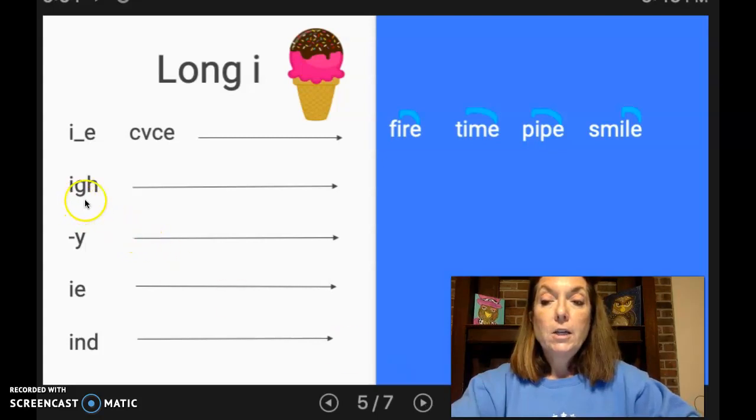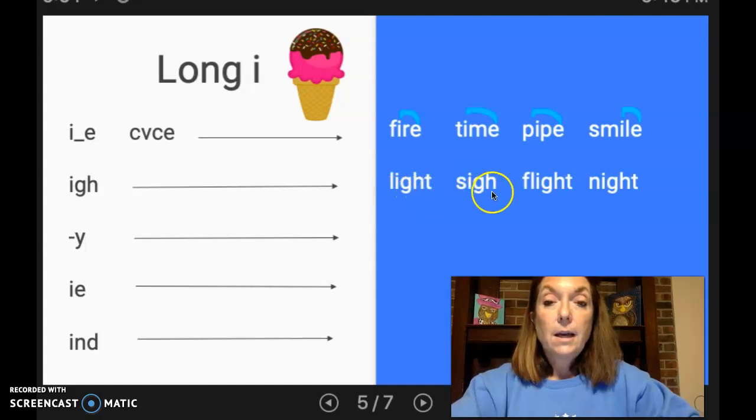IGH. Now this is not like in long A where it was EIGH, because that would say A. This is just IGH. And you guys have heard me sing IGH, IGH, I I IGH. That's the sound it makes. That's one way to spell the long I sound. We see that in light, and sigh, and flight, and night.